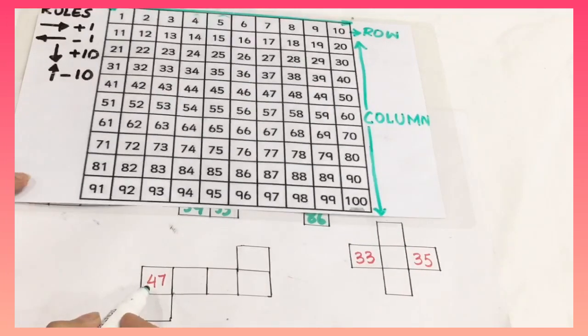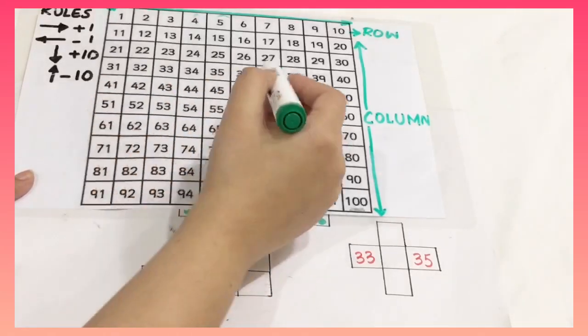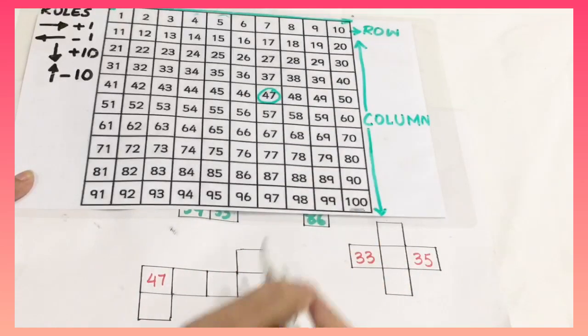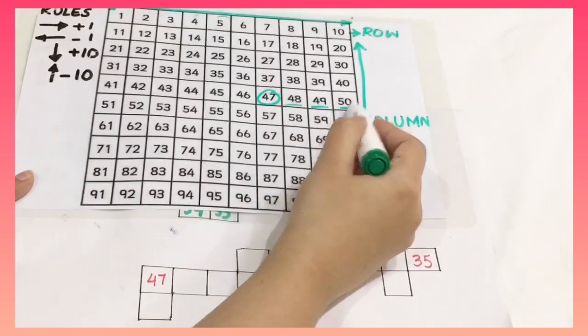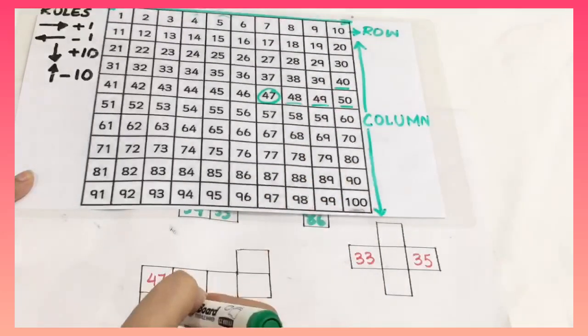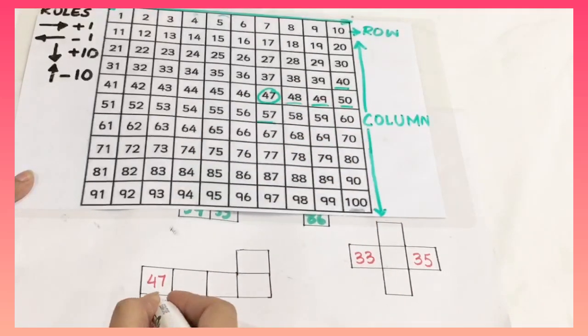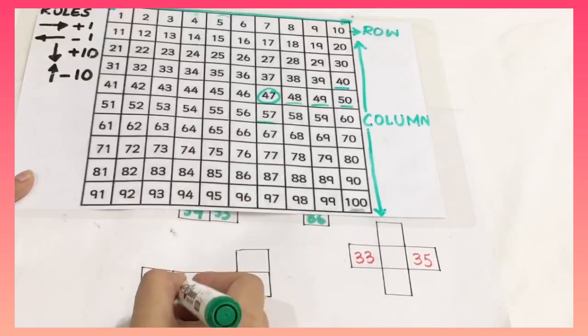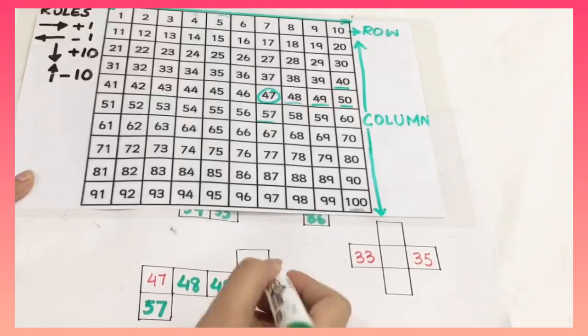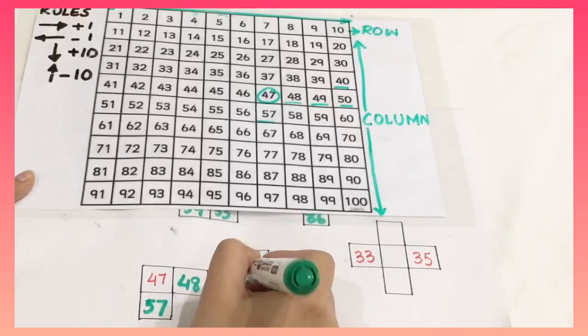Now I am going to identify this shape in the 100 square chart. First of all I have to find 47. Now I have 1, 2, 3 blocks and then 1 block up, this block, and then I have 1 block below. So first of all I am going to write 57 here. Then this is 48, 49, 50 and as I move up the number decreases. So this will be 40.